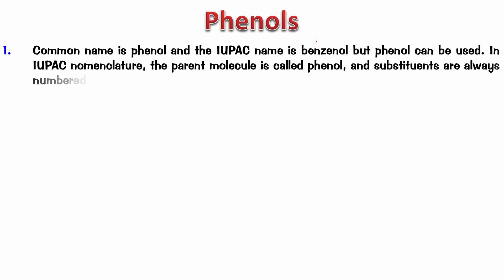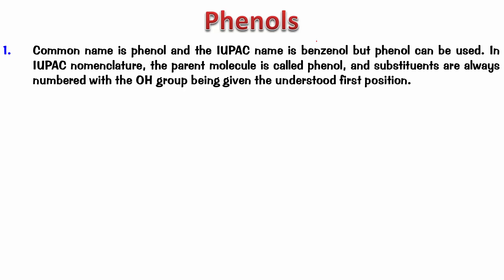In IUPAC nomenclature, the parent molecule is called phenol and substituents are always numbered with the OH group being given the understood first position. So this is phenol.